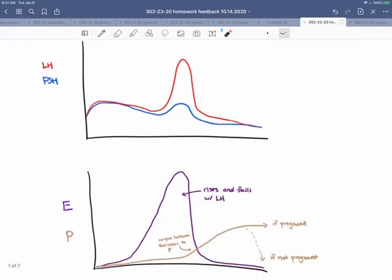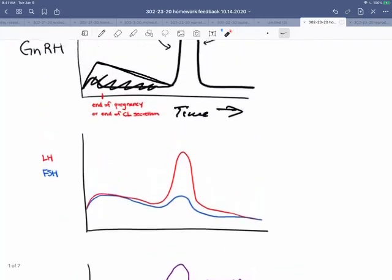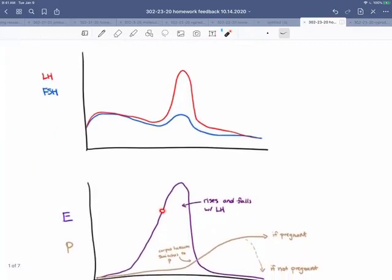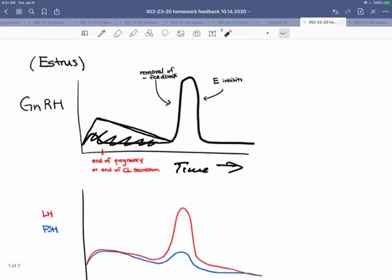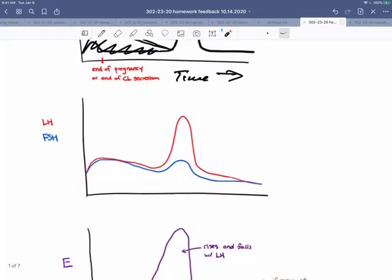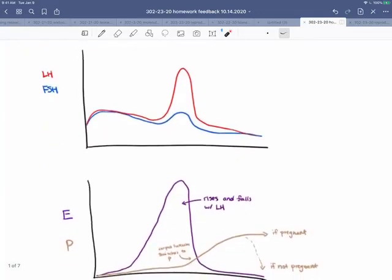The surge is happening because, at some point, the threshold for estrogen gets high enough, as the follicles are growing and producing more and more estrogen, it gets high enough to trigger positive feedback on the GnRH neurons. So you get a rise in GnRH, you get a rise in LH, even more estrogen, even more estrogen gives you even more GnRH, even more LH, and so on until you get the surge. That surge causes ovulation.